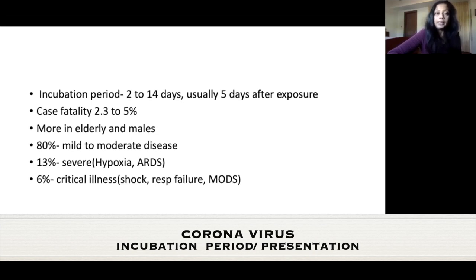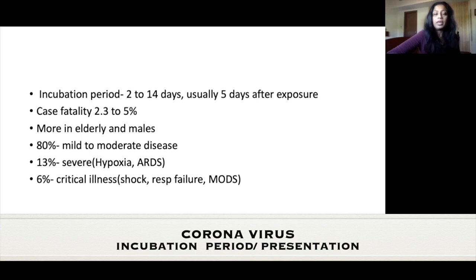COVID-19 occurs more commonly in the elderly over 60 and in males, who are dying at almost double the rate of females — something not fully understood. It could be that males have a higher percentage of smokers and chronic lung disease or COPD. There is also a theory that the ACE2 receptor is coded on the X chromosome, potentially offering women some protection, but we don't fully know why males are dying at double the rate.